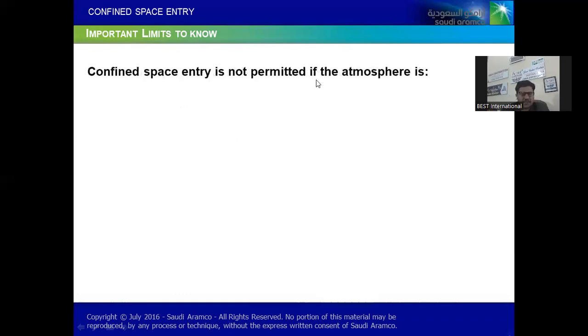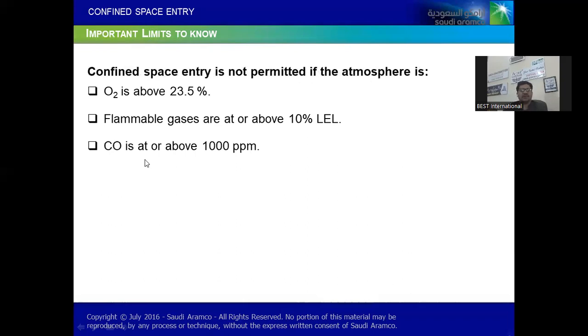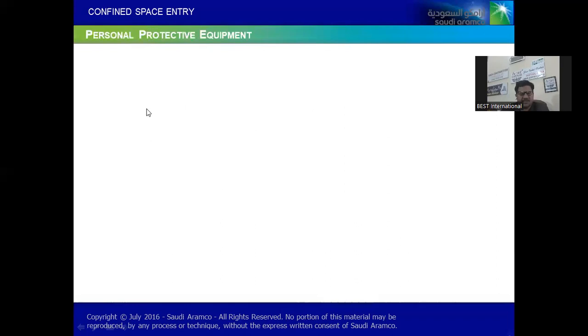The confined space entry is not permitted if atmosphere is like - if we take an example of oxygen above 23.5%, if that level of oxygen is there, no entry is permitted. Same way if we talk about the flammable gases like LEL at or above 10%, again no entry, no work. Carbon monoxide is at or above 1000 ppm, no entry, no work. H2S is at or above 100 ppm, because 100 ppm is IDLH, Immediately Dangerous to Life or Health. Other toxic gases are above their IDLH level.